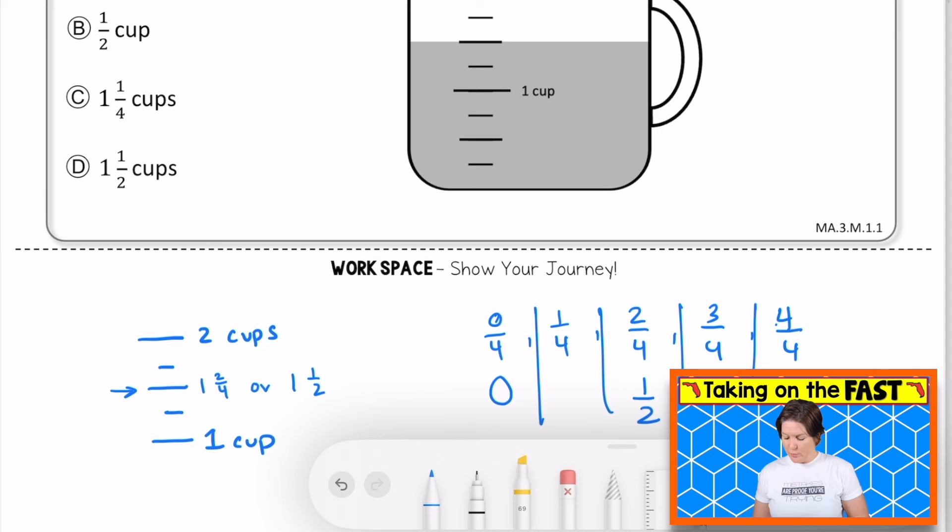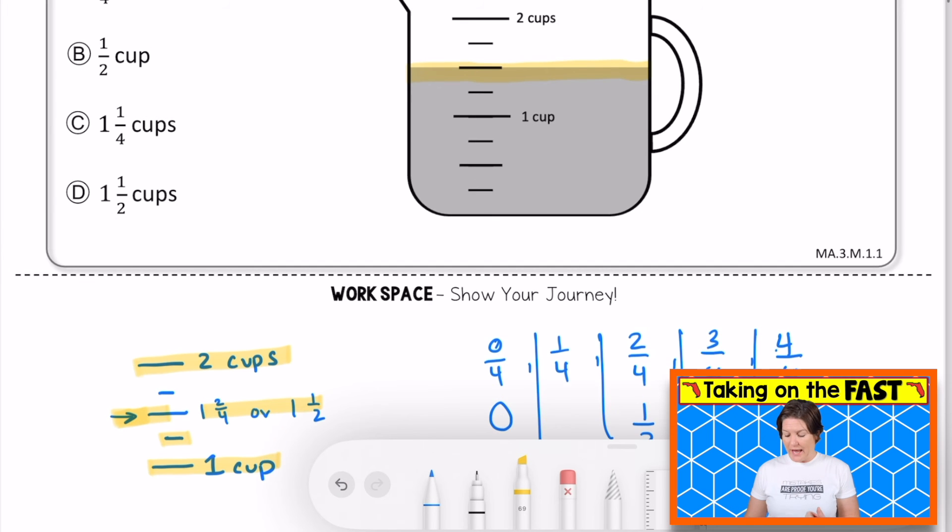What I did was I said, okay, it's pointing between one cup and two cups. So I know it's one and something, and it's at this line right up here. If you can see it, I'm just kind of pulling that information down. I know that this right here is one and one fourth, and this next spot that it's measuring to would be one and two fourths or one and a half cups.